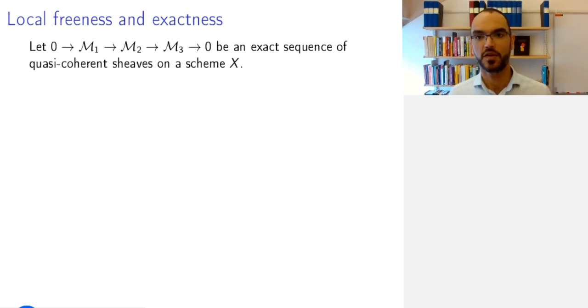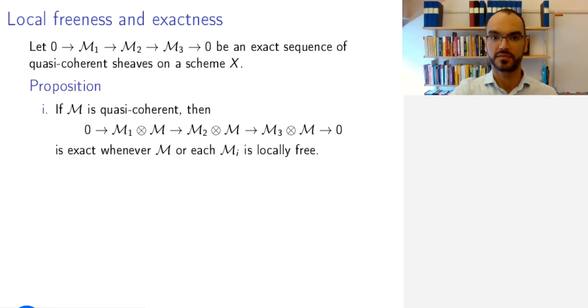One property of local freeness that is important is how it relates to exactness. If you have an exact sequence of quasi-coherent sheaves on a scheme X, then it will remain exact after tensoring with a quasi-coherent module M, provided that either M itself or all of the M_i are locally free. Again, this is checked locally and the corresponding result is known for modules. If you know the result for modules, free modules have exactly this property that they behave well with exactness. In general, tensoring is not an exact functor.